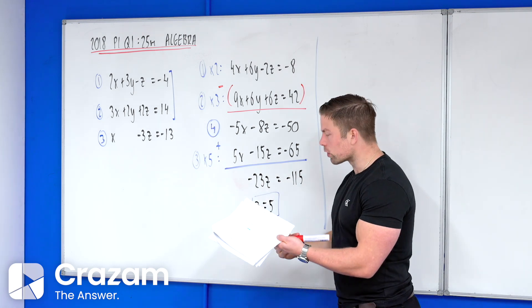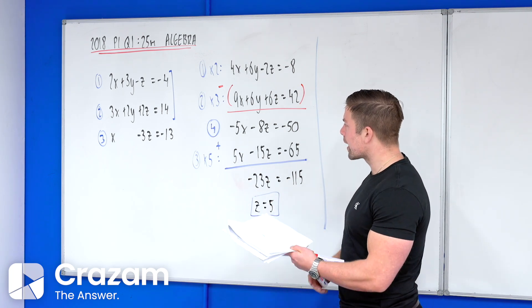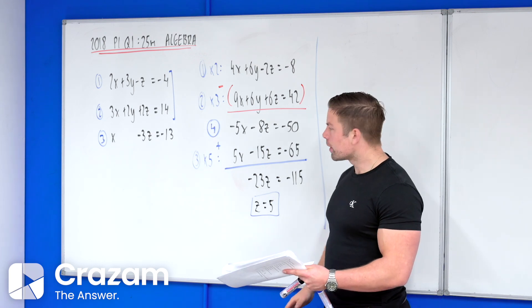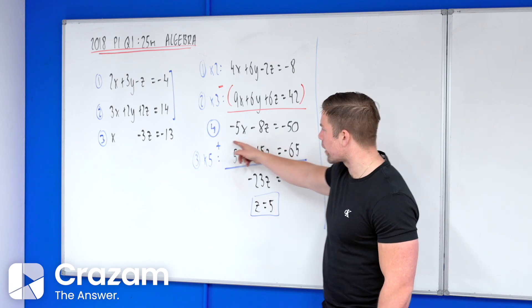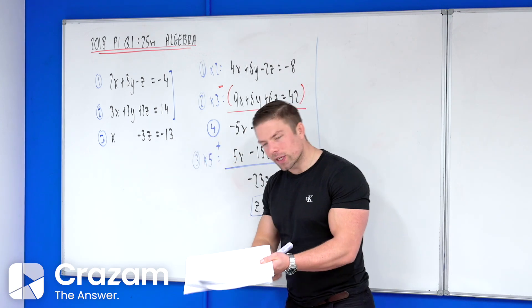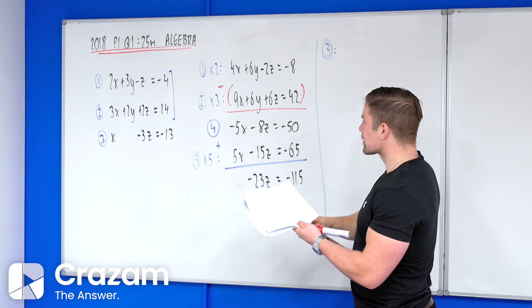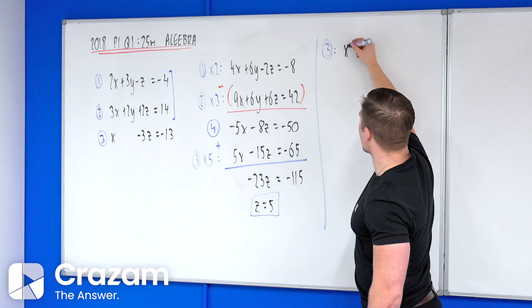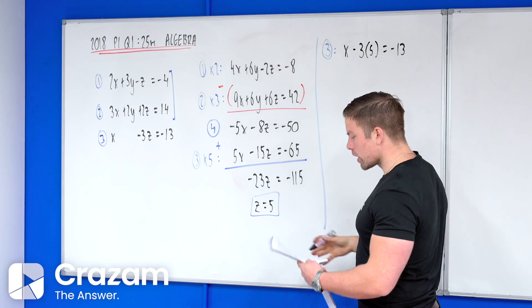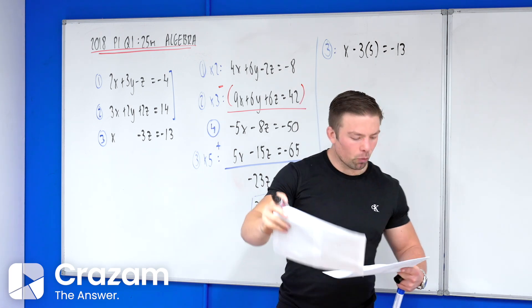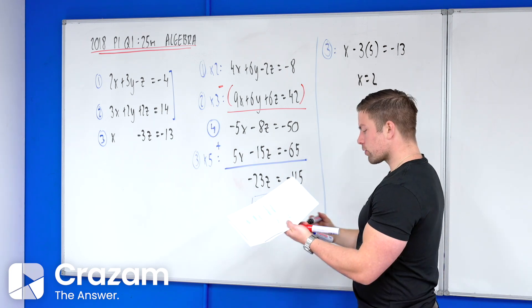A big mistake on the marking scheme will be to stop there, so let's continue on. This is an equation with three unknowns. We have z, so if we sub back in we can now get x and then we can get y. So I'm going to sub z into either equation four or three. Into equation three, I have x minus three times five equals to minus thirteen, and if we tidy that up we should get that x equals to two.